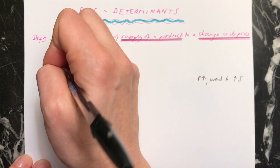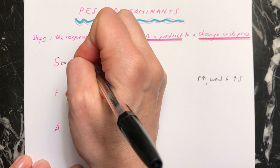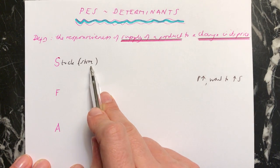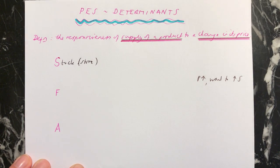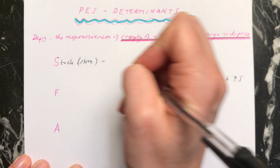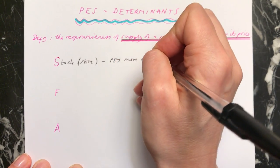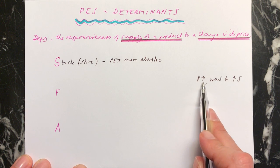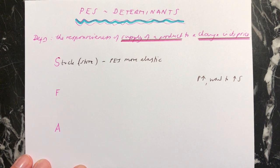The S stands for stock. If you have a stock of something — like a store of something sitting in a warehouse — you're able to supply it when you want to. So if you have something in stock, your PES will be more elastic because supply will be able to respond more easily when there's an increase in price. If you want to supply more, you can just take it out of your stock and supply it to the market.